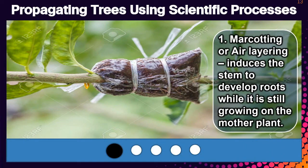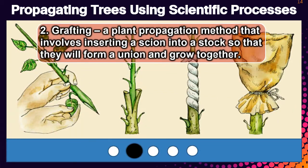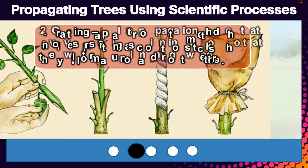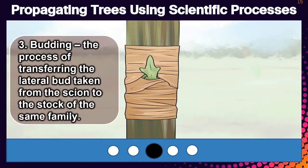Propagating trees using scientific processes. Marcotting or air layering induces the stem to develop roots while it is still growing on the mother plant. Grafting is a plant propagation method that involves inserting a scion into a stock so that they will form a union and grow together. Budding is the process of transferring the lateral bud taken from the scion to the stock of the same family.